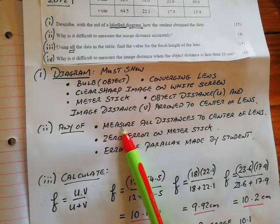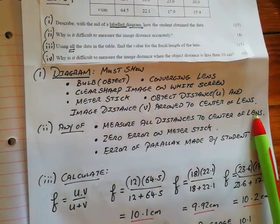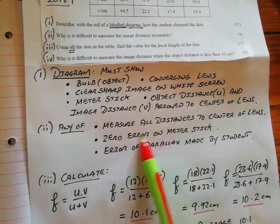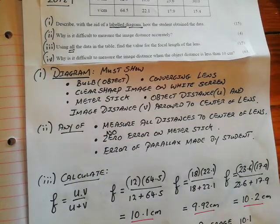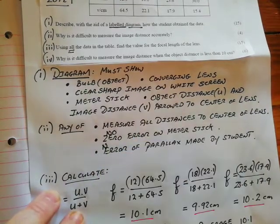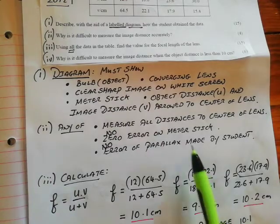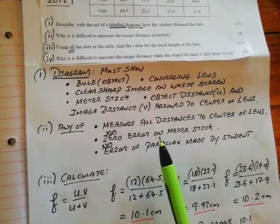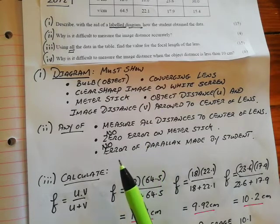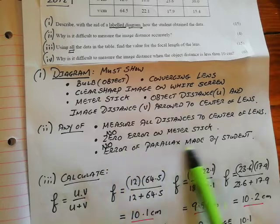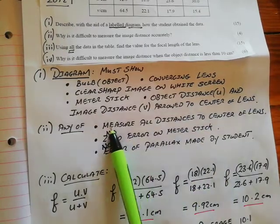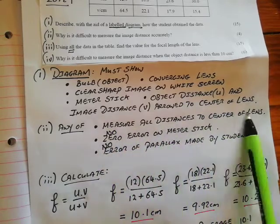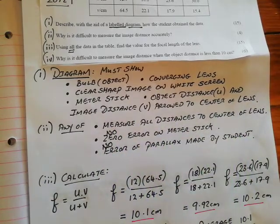One way of measuring the image distance accurately is measure all distances to the center of the lens. Another way of measuring it more accurately is making sure there's no zero error on the meter stick. Then another way of making sure of measuring the image distance better is making sure there's no error of parallax made by the student. So any of those three answers would have answered the part, why is it difficult to measure the image distance?